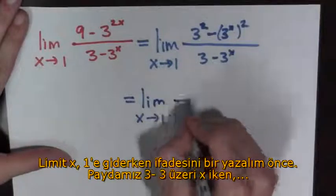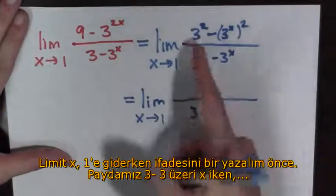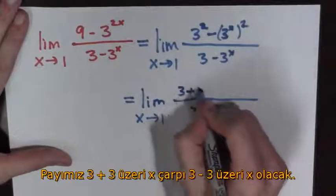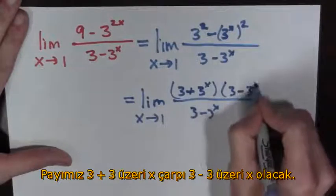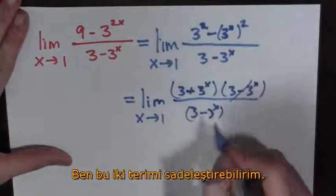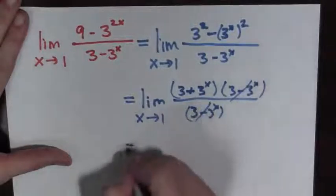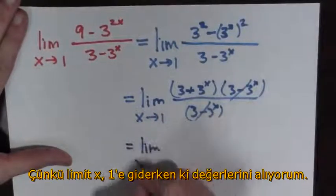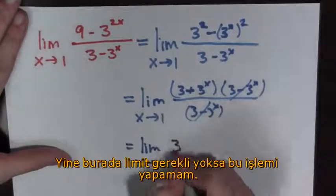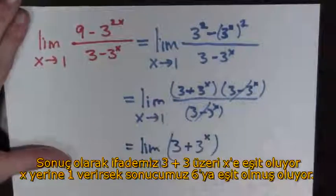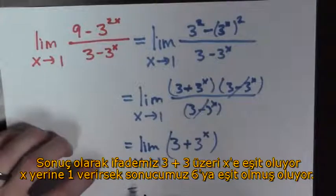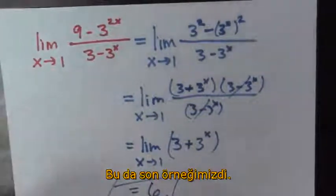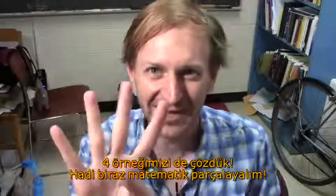We factor it: we have 3 minus 3 to the x in the denominator, times 3 plus 3 to the x times 3 minus 3 to the x in the numerator. Now I can cancel these two because we're taking the limit, and this is equal to the limit as x goes to 1 of 3 plus 3 to the x. The limit is needed here, otherwise these are not equal. This is equal to 3 plus 3 to the 1, which is equal to 6. Done! Four examples done. Let's go do some more math.